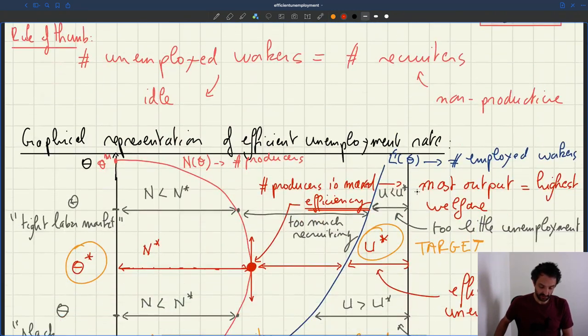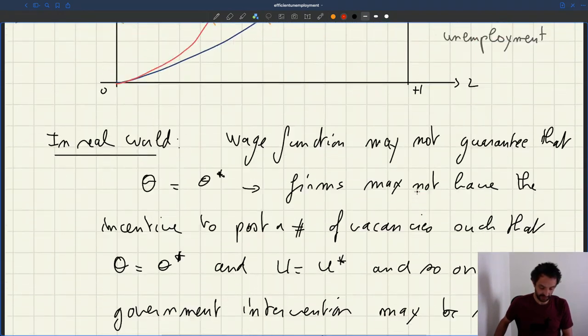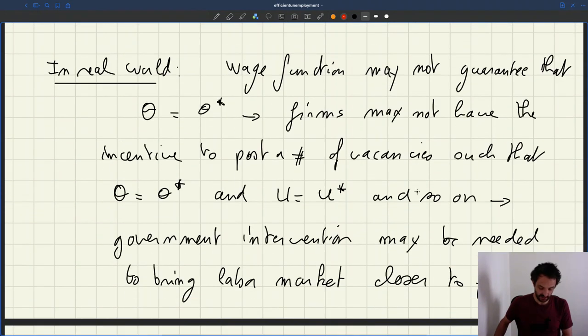So this is kind of a setup in a very basic matching model. There are a bunch of things that are missing. So first of all, it's very specific to the matching model with its specific structure. We've also completely omitted the fact that the value of time may be different for an employed worker.